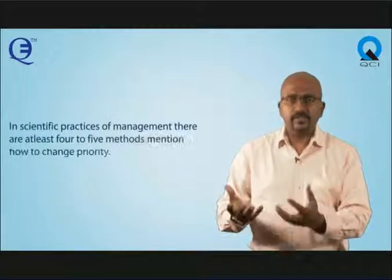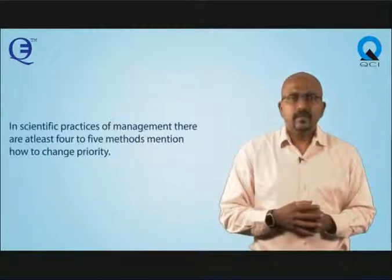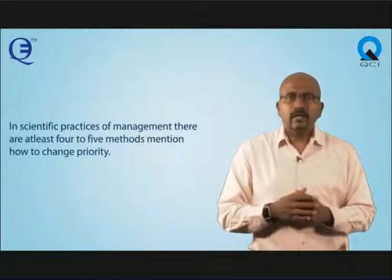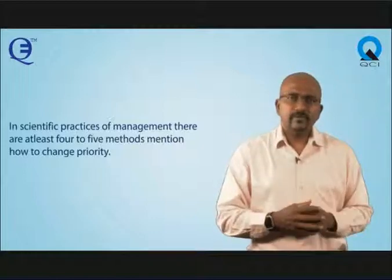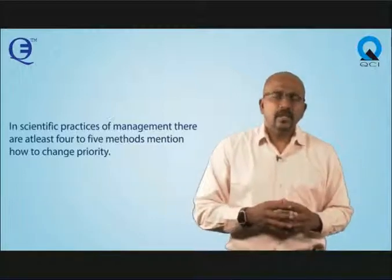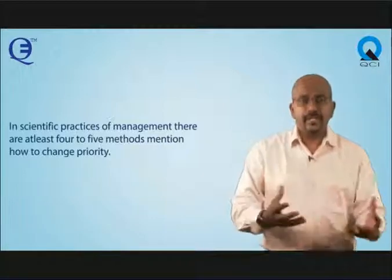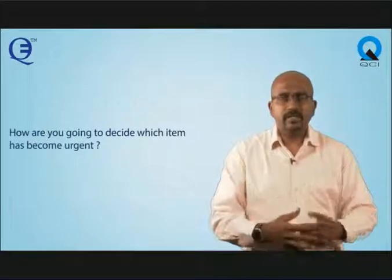In our scientific practices of management or production management, there are at least four to five methods mentioned on how to change priority. If there are four to five items or work orders in the pipeline, how are you going to decide which item has become urgent?